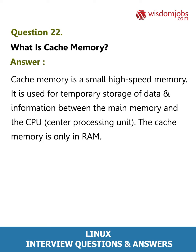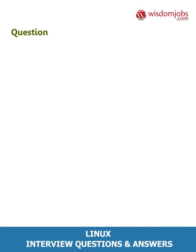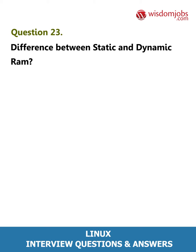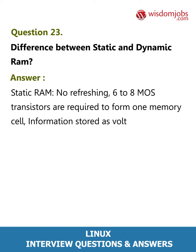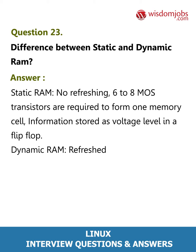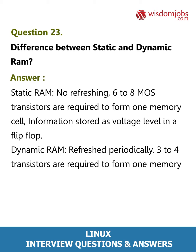Question 23: What is the difference between static and dynamic RAM? Answer: Static RAM requires no refreshing and uses six to eight transistors to form one memory cell; information is stored as a voltage level in a flip-flop. Dynamic RAM is refreshed periodically, uses three to four transistors per memory cell, and information is stored as a charge in the gate-to-substrate capacitance.